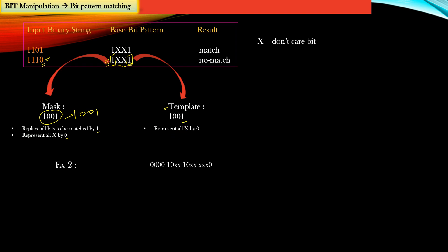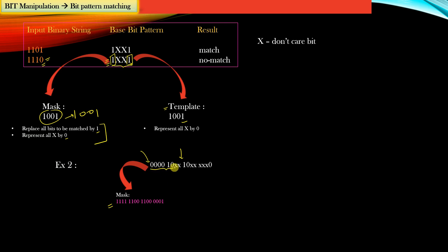Let's take one more example. Suppose this is the base bit pattern and we need to compute the mask and template from it. The mask value is obtained by applying two steps: replace all the bits which need to match by one, and replace all the don't-care bits by zero.